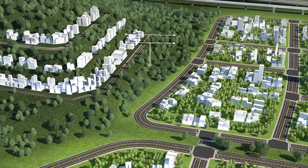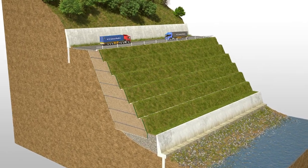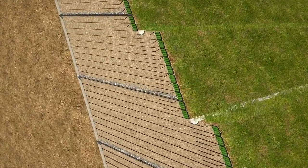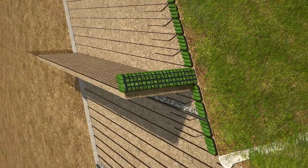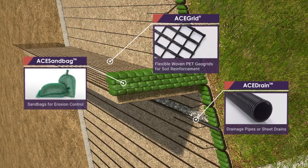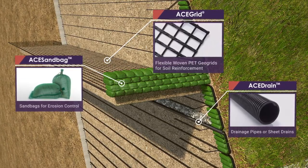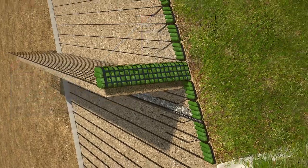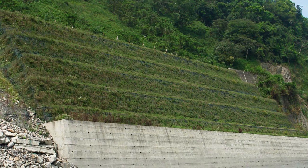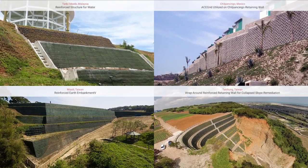Slope Stabilization: The mechanically stabilized earth, composed of ACE grid geogrid, facing system, drainage materials, and backfill soil, has features of easy installation, making use of in-situ materials and vegetation on the facing. Such a solution can significantly reduce construction cost and time. It will appear natural and is eco-friendly, and has even higher seismic resistant capability, particularly suitable for environments prone to earthquake.